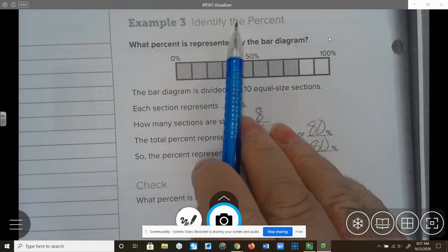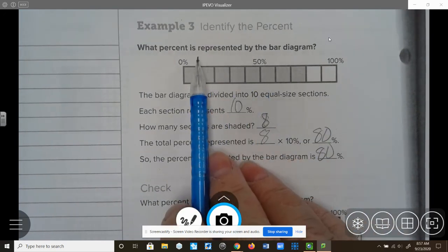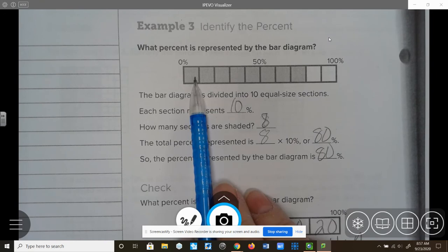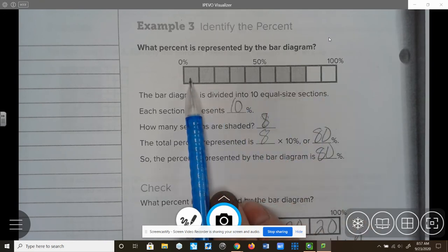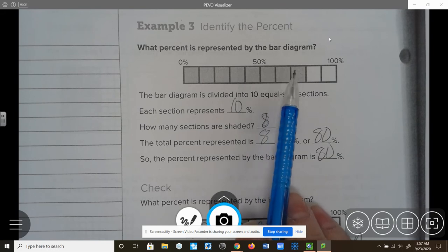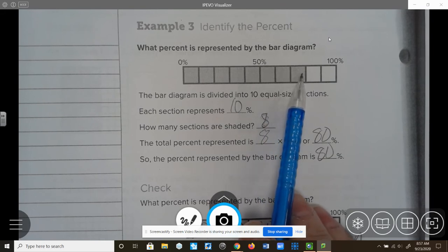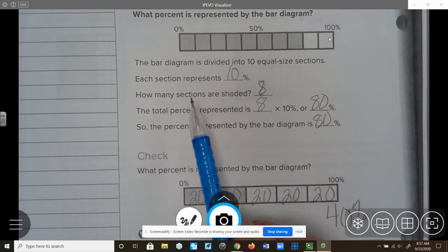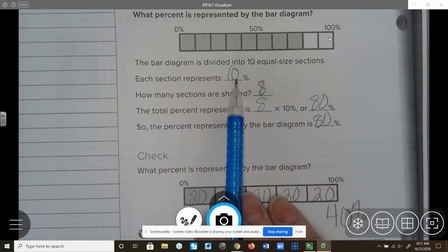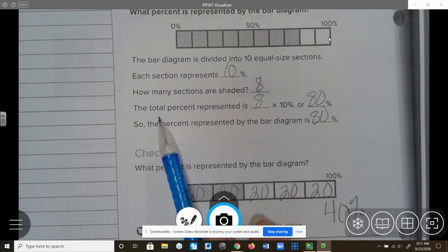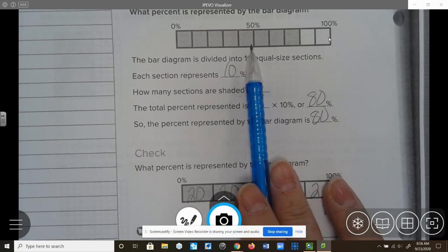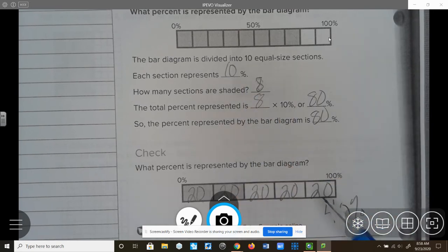Example three, identify the percent. So now we have a picture and we need to find out what percentage is represented by this bar diagram. So if I'm taking a look here, I have 0 to 100 and I have 10 sections. So that means each section is 10%. And I have 1, 2, 3, 4, 5, 6, 7, 8 sections that are colored in or shaded in. So that means it would be 80%. So let's fill this in, our notes in. The bar diagram is divided into 10 equal sections. Each section represents 10%. How many sections are shaded? There's 8. We counted those. The total percent represented is 8 times 10%, which is 80%. So this bar diagram up here in example three represents 80%. On to the check.